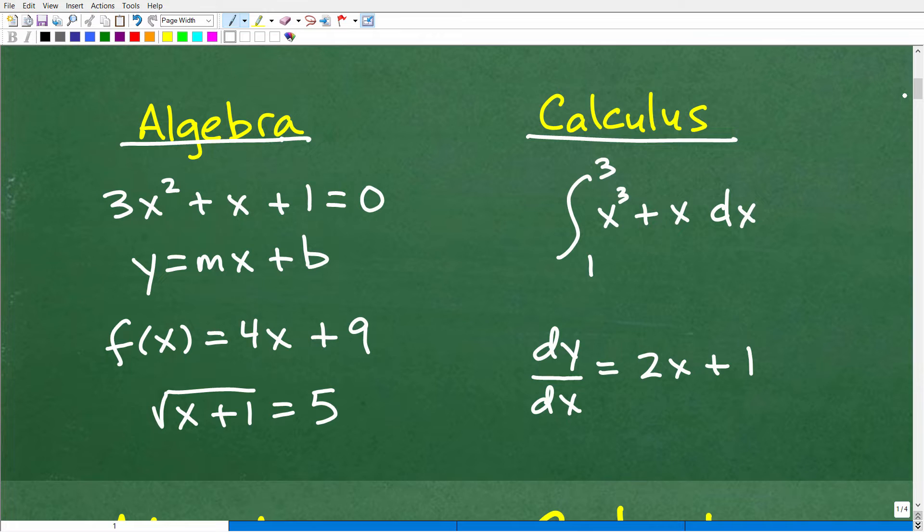Let's take a look at what algebra and calculus looks like. Here is an equation you're going to see in algebra - I'm keeping it at the algebra one level. Then you have different formulas like this: y equals mx plus b. This is the equation of a line. You study functions in algebra and other types of equations like this, the square root of x plus 1 equals 5. All this right here, when you see this, you would classify this as algebra.